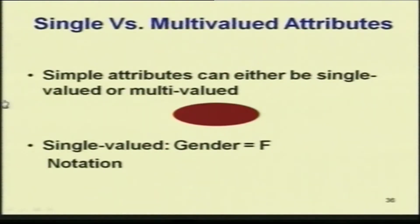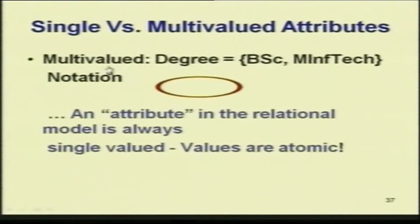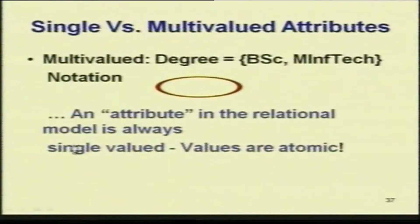Now, single and multivalued attributes — you must understand the difference here. Simple attributes can be either single valued or multivalued. For example, a gender attribute can have only one value at a time. A multivalued attribute — suppose I have an attribute called degree — then I can have two values for it: MSE and MTECH for the same attribute. An attribute in the relational model must always be single valued — that is one of the conditions we spoke about: it has to be atomic.